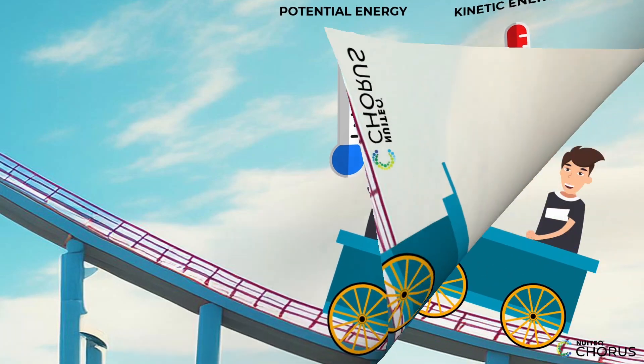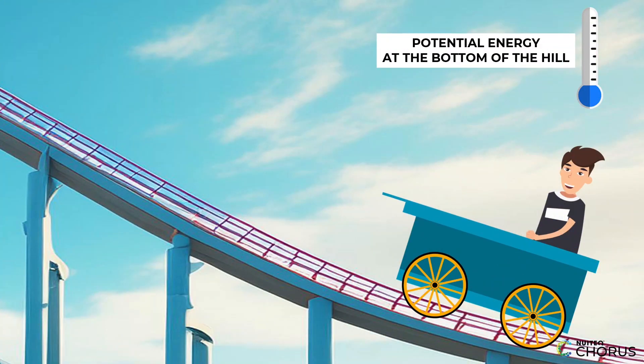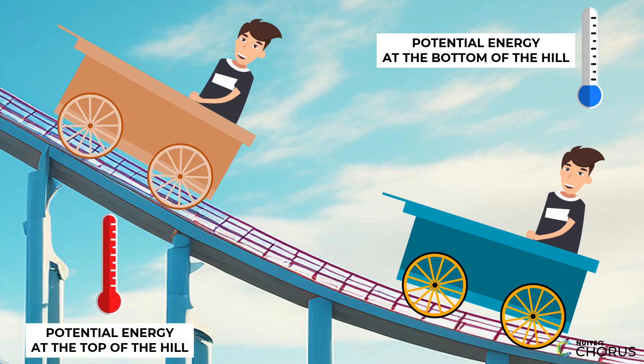But here's the thing: the amount of potential energy a roller coaster car has depends on where it is on the track. When the car is at the bottom of a hill, it doesn't have as much potential energy stored up as it does at the top. But when it's at the top of a hill, it has a lot of potential energy stored up and ready to go.